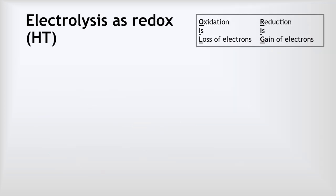Now we've recapped electrolysis, we're going to get into some higher tier material where we explore electrolysis reactions as redox reactions. A redox reaction is one where reduction and oxidation take place at the same time. We use the OIL RIG mnemonic: OIL means oxidation is loss of electrons, and RIG means reduction is gain of electrons.